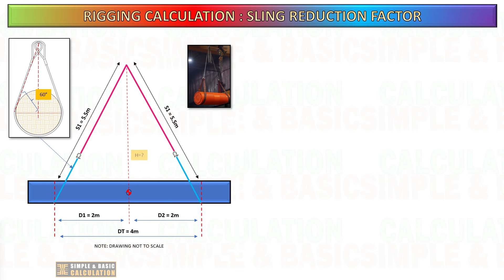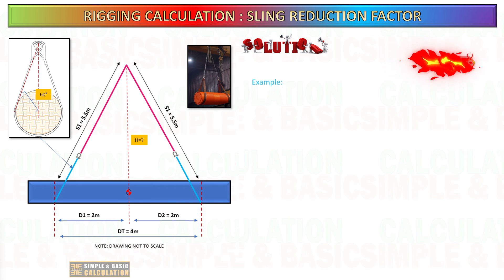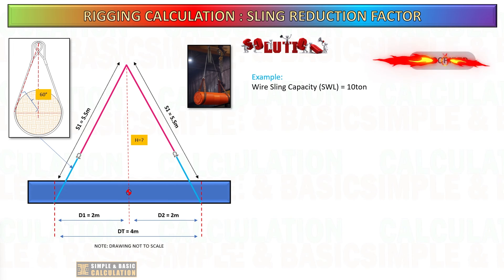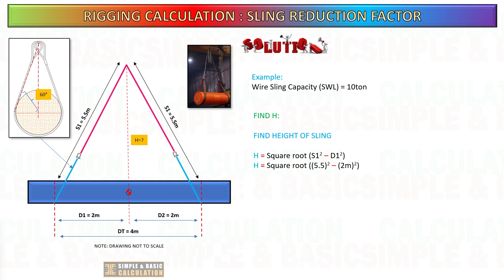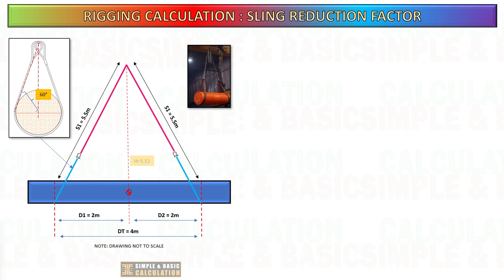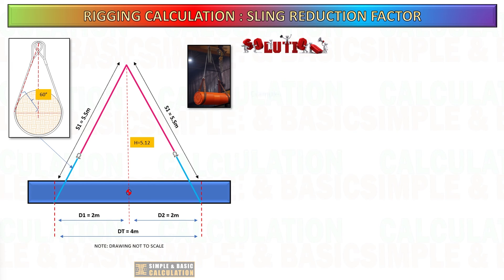Next, how about when using a two-leg basket hitch? This is the same method and formula utilized for the choker hitch. We need to find the height of the sling. Once we get the height of the sling, we divide the height of the sling by the length of the sling to get the reduction factor. Once we get this value, we can calculate the new SWL of the sling by multiplying the original SWL by the angle factor and the reduction factor.